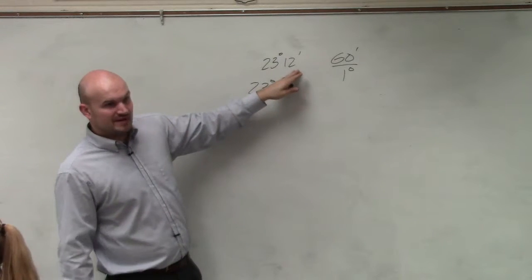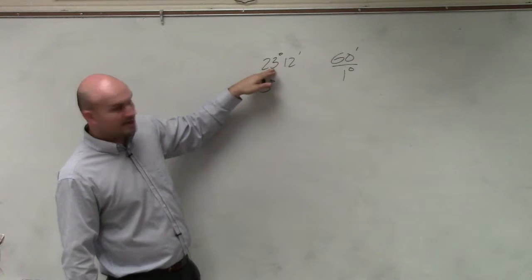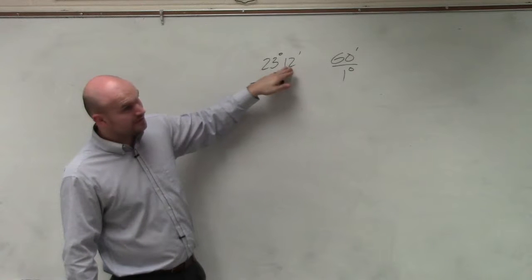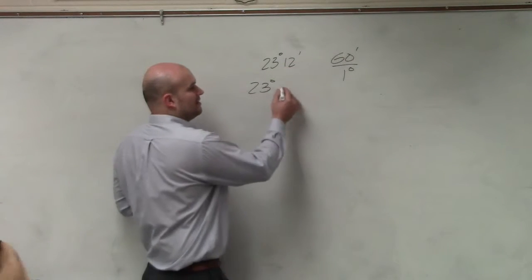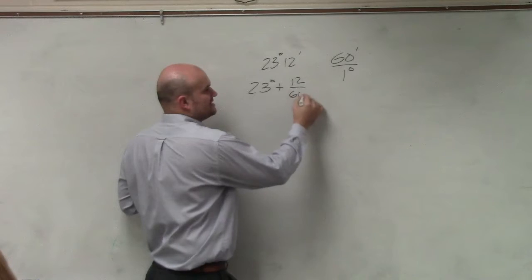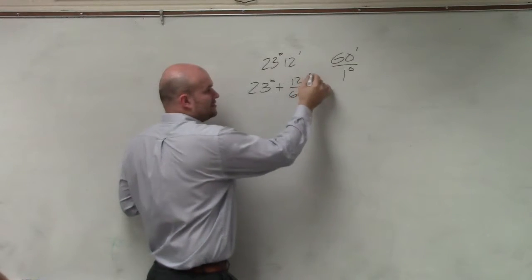But we don't have 60 of them, otherwise it would be 24, right? We only have 12 of these. So therefore, I'm going to add 12 out of 60 degrees.